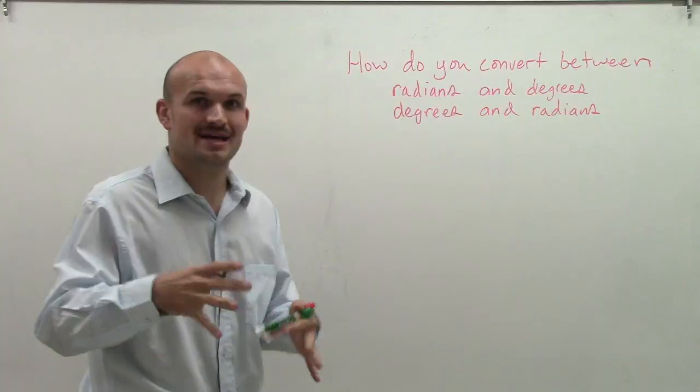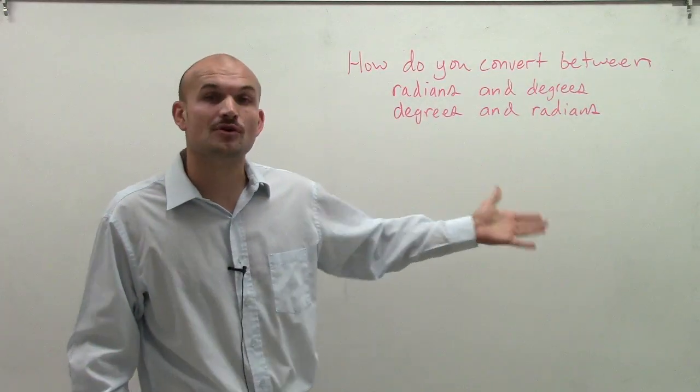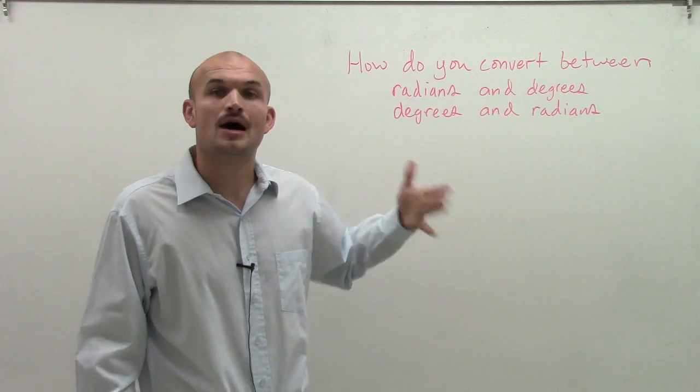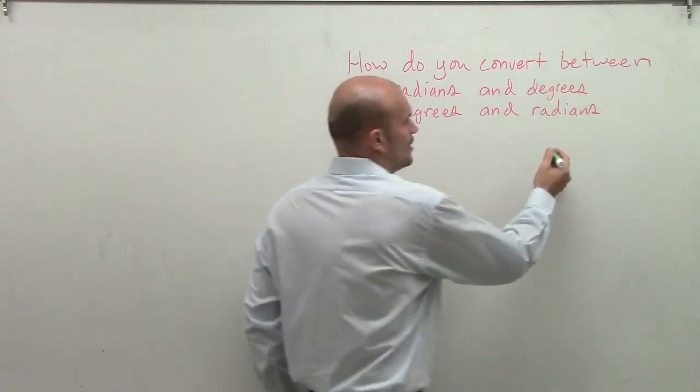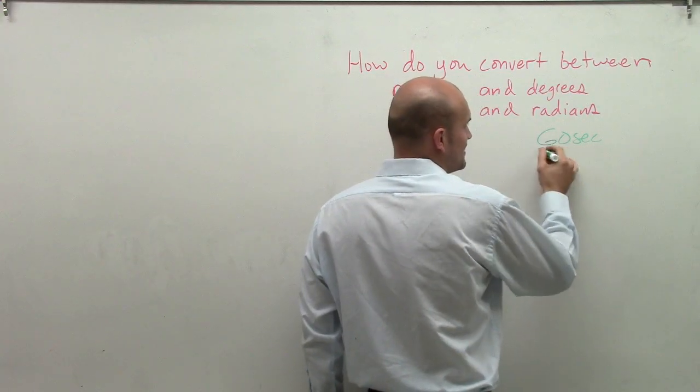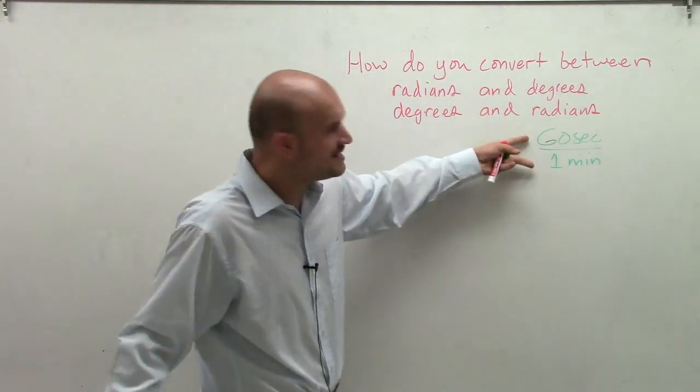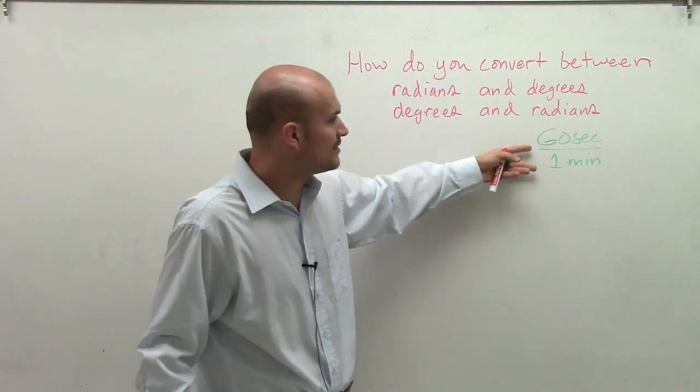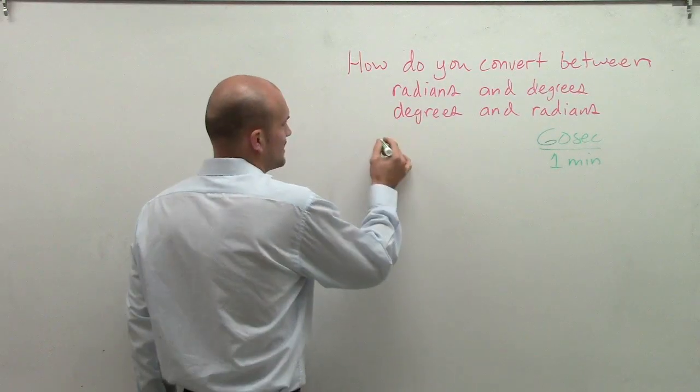The important thing I just said is units. Remember, radians and degrees, they're both ways where we measure angles. However, they're in different units. The same thing we can look at is, what about if I said 60 seconds? That's the same thing as one minute, right? We can say that these are equivalent. However, they're in two different units.